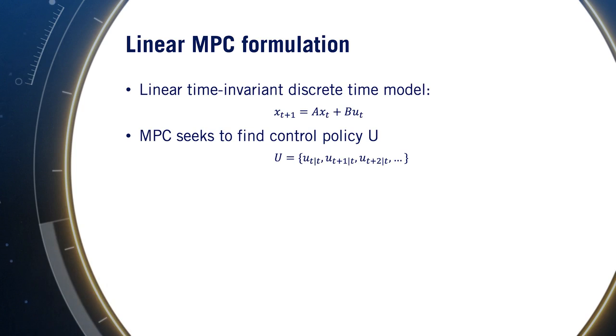MPC seeks to find a control policy U of inputs over a finite horizon. If all the states are to be driven to zero, the objective function, or cost function when we minimize, can be defined as follows with quadratic error on both deviations of the state from zero and on non-zero control inputs. This is similar to the optimization problem of optimal control theory and trades off control performance and input aggressiveness. Note that the matrices Q and R are called weight matrices and can be selected to achieve a particular type of response.